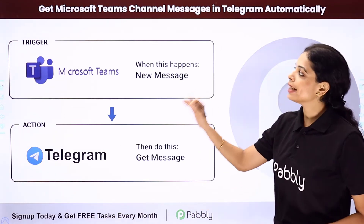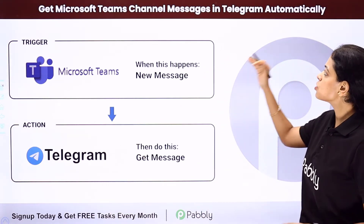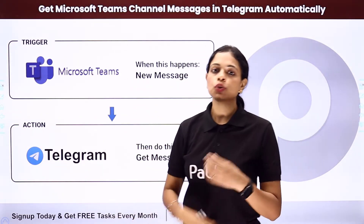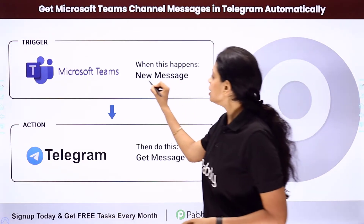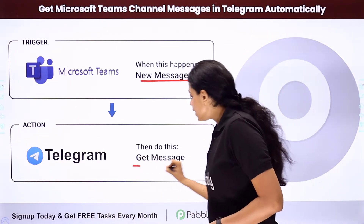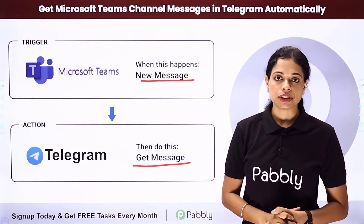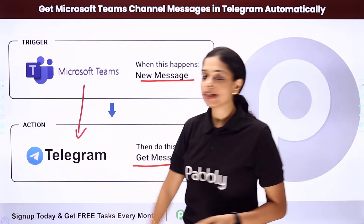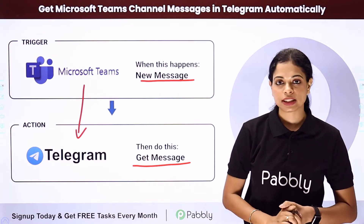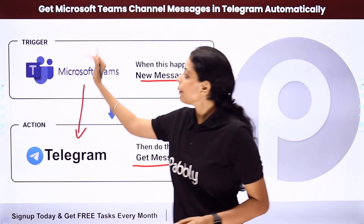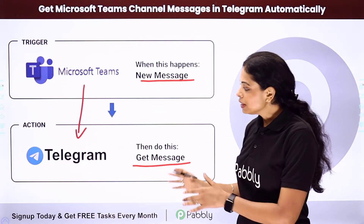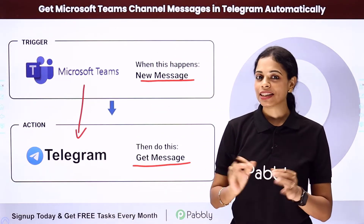In this video, we'll see how to get Microsoft Teams channel messages in Telegram automatically. So let's say you're using Microsoft Teams to communicate with your team, and every time there's a new message, you want this message to be also shared on Telegram. You will have to integrate these two applications, and you can automate this process with the help of Pabbly Connect software. Your trigger application would be Microsoft Teams and your action application would be Telegram.